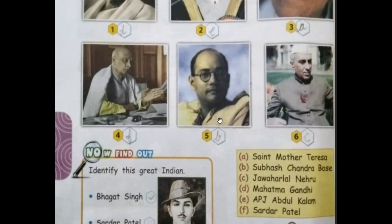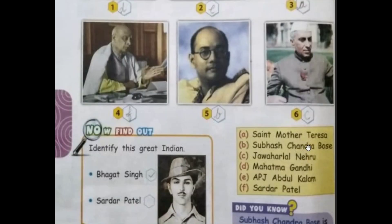Subhash Chandra Bose was known as Netaji, so we will write B here. The last one is Jawaharlal Nehru. He was the first Prime Minister of India. He was born on 14th November 1889 and was popularly known among young children as Chacha Nehru, so we will write C here.